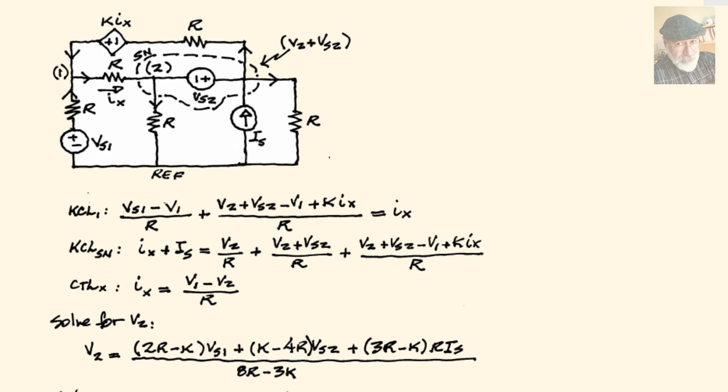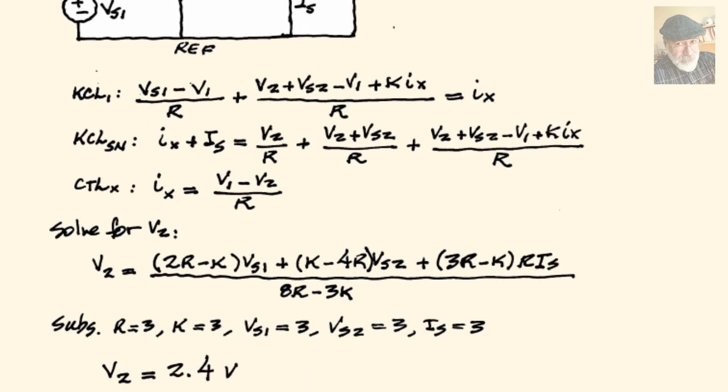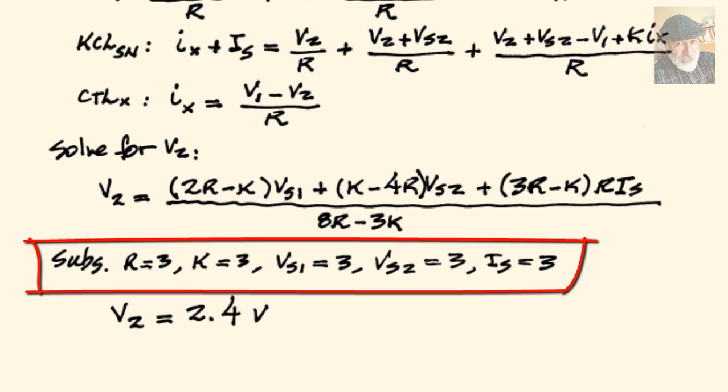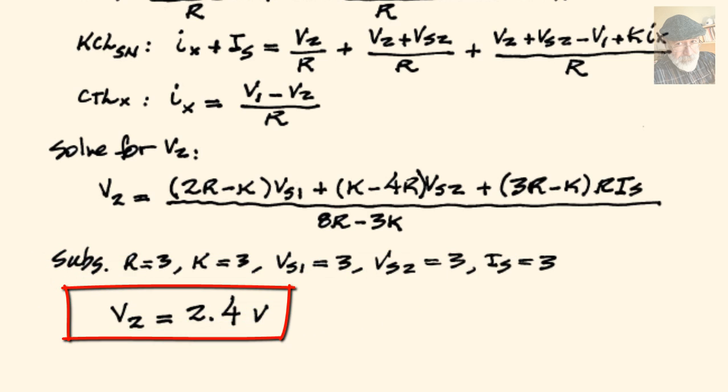We solve for them and we get V2, which is what the problem is asking us to find. If we substitute the variables of R, K, VS1, VS2, and IS, we obtain the final answer. The voltage V2, which is 2.4 volts.